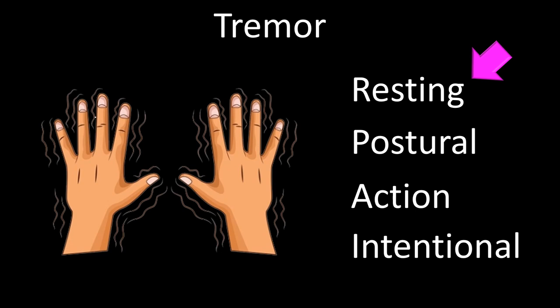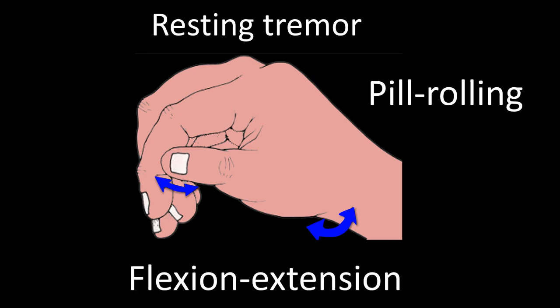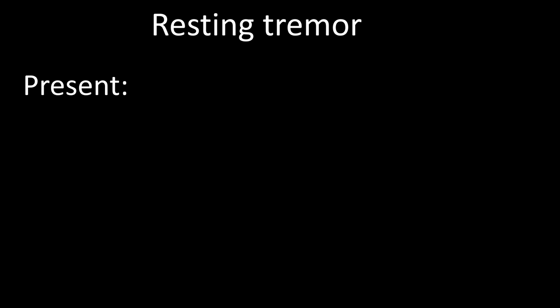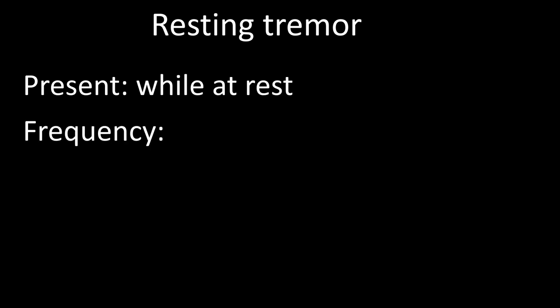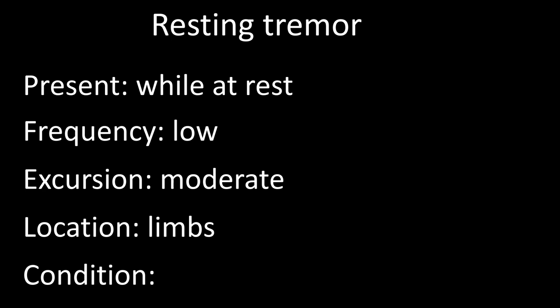Resting tremor is often referred to as pill rolling tremor because it resembles a person rolling pills between the index and the thumb. It most often consists of flexion-extension movements at the wrist and fingers, and occurs mainly at rest. Frequency of oscillations is low — about four per second. Degree of excursion is moderate, and the location most often involved is the limbs. Resting tremor is most often encountered in patients with Parkinson's disease.